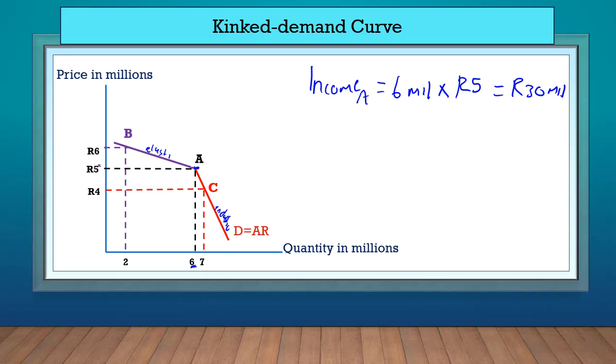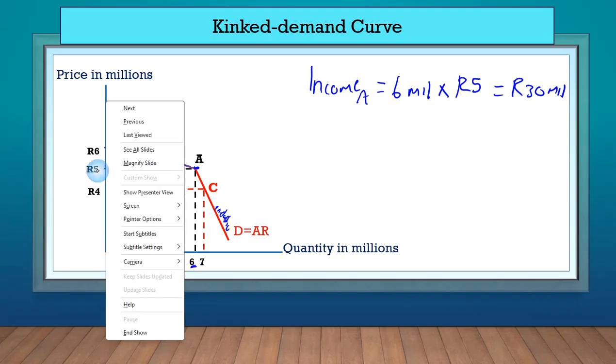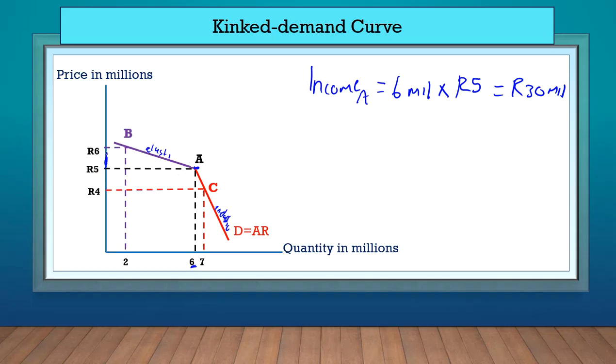So let's say, for example, that one firm decides they're going to increase the price so that they can make more money. If they increase the price, let's say from 5 rands to 6 rands, now they're going to be at point B.